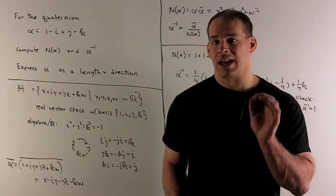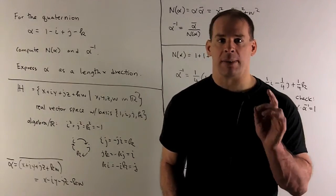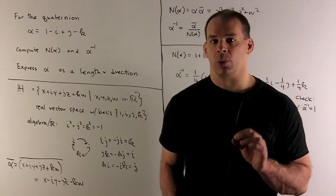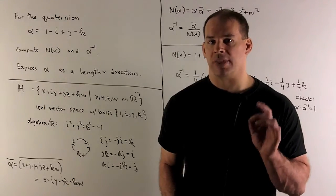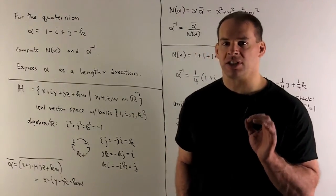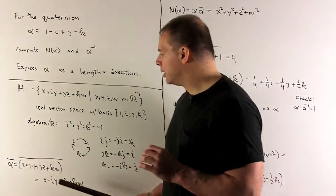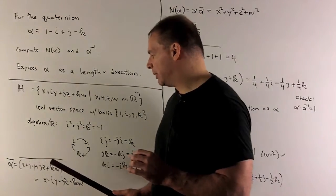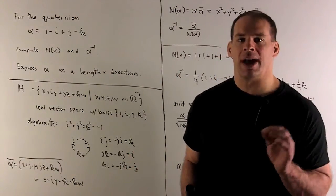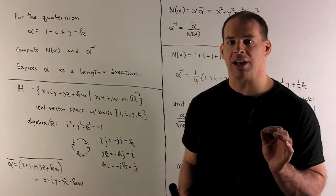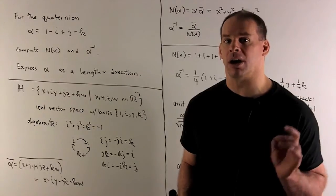We also have a notion of conjugation. Same ideas with the complex numbers. We're going to leave the real part alone. So that's the x. And then the part that's in the span of i, j, and k, we multiply by a minus 1. So x plus iy plus jz plus kw goes to x minus iy minus jz minus kw under conjugation.